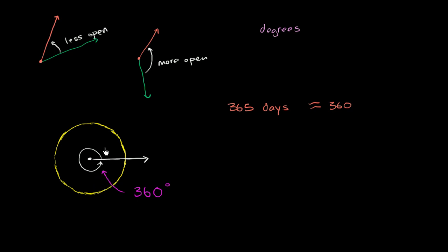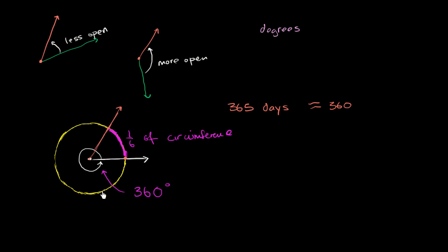One way we can measure an angle is to put one of the rays at this part of the circle, and then the other ray of the angle will look something like this. The fraction of the circle's circumference that is intersected by these two rays gives the measure of the angle. For example, if this arc is 1/6 of the circle's circumference — 1/6 of the way around — then this angle is going to be 1/6 of 360 degrees, which is 60 degrees.